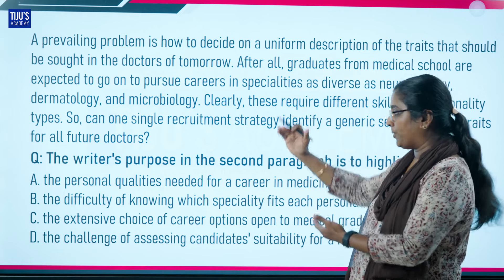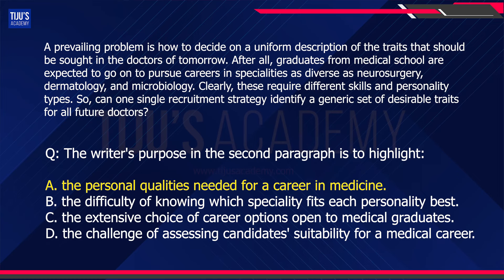We need to comprehend the meaning and match it to the options. The first option — personal qualities needed for a career — is about required skills and different skills and personality. We can eliminate it. The second option — difficulty of knowing which speciality fits each personality best — doesn't match the writer's focus on the diversity of specialities, so we eliminate option B.